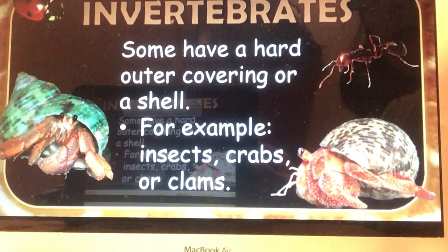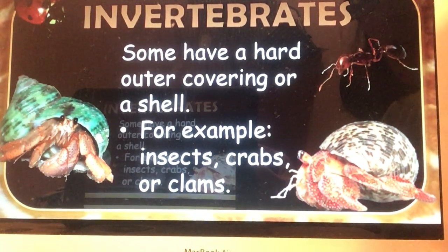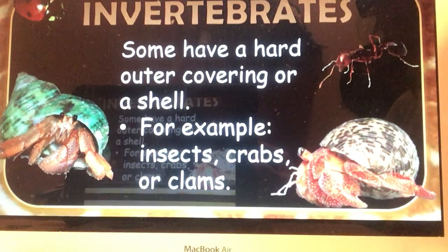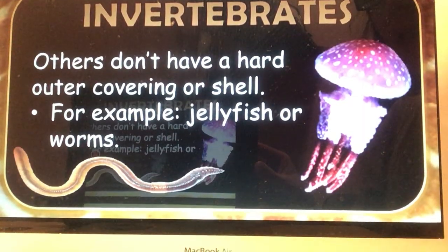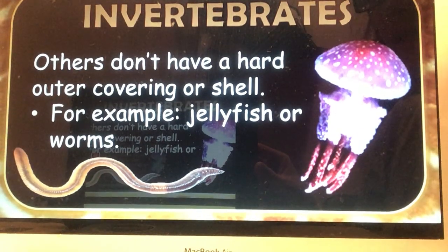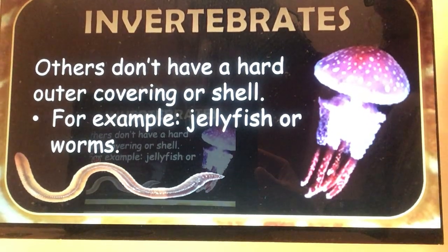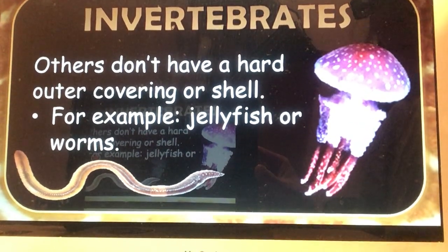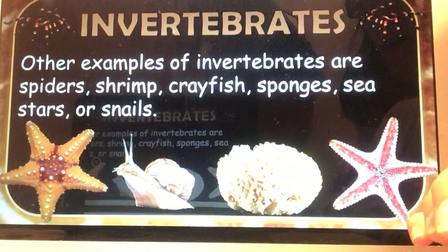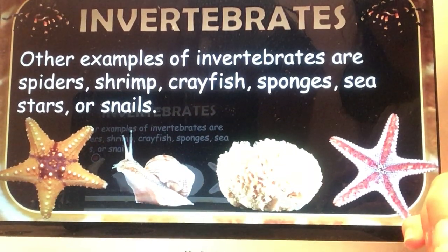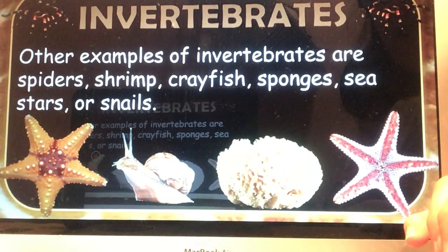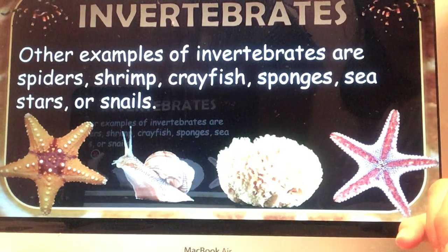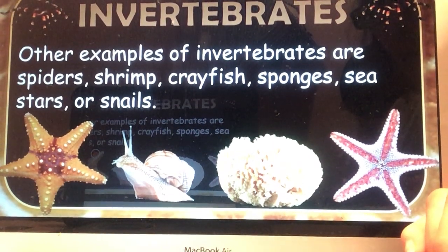Invertebrates are animals without a backbone. What makes them different is some have a hard outer covering or shell — for example, insects, crabs, and clams. Others don't have a hard outer covering, like jellyfish and worms, which are also considered invertebrates. Other examples include crustaceans found in the ocean, such as starfish, snails, shrimp, and spiders.